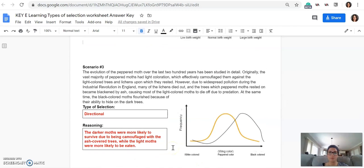And then the last scenario, the peppered moth example, which you guys will look at more next week. You're going to have a little simulation you're going to do with the peppered moths. This is a really fun example. So the evolution of the peppered moth over the last 200 years has been studied in detail. Originally, the vast majority of peppered moths had light coloration, which effectively camouflaged them against the light colored trees and the lichens, which is a symbiotic relationship between algae and another protist, upon which they rested.